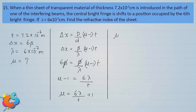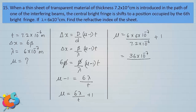Substituting: mu equals 6 into 6 into 10 power minus 7 divided by 72 into 10 power minus 7, plus 1. The numerator is 36 into 10 power minus 7 divided by 72 into 10 power minus 7, which simplifies to 36 divided by 72, giving 0.5. Therefore mu equals 0.5 plus 1, so the refractive index of the material is 1.5.